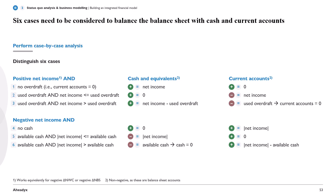Let's start with the first case: positive net income and no overdraft. This just means that we will increase our cash and equivalents on the asset side of the balance sheet by net income. That's very simple, and the counter-accounts — nothing will change there.